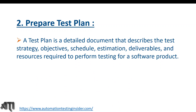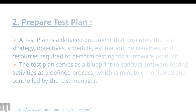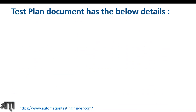The second step is to prepare the test plan. A test plan serves as a blueprint to conduct software testing activities, as a defined process which is monitored and controlled by the test manager. Once we define every activity in the test plan, the test manager monitors whether every activity is in place. The third step is to get the approval of the test plan.